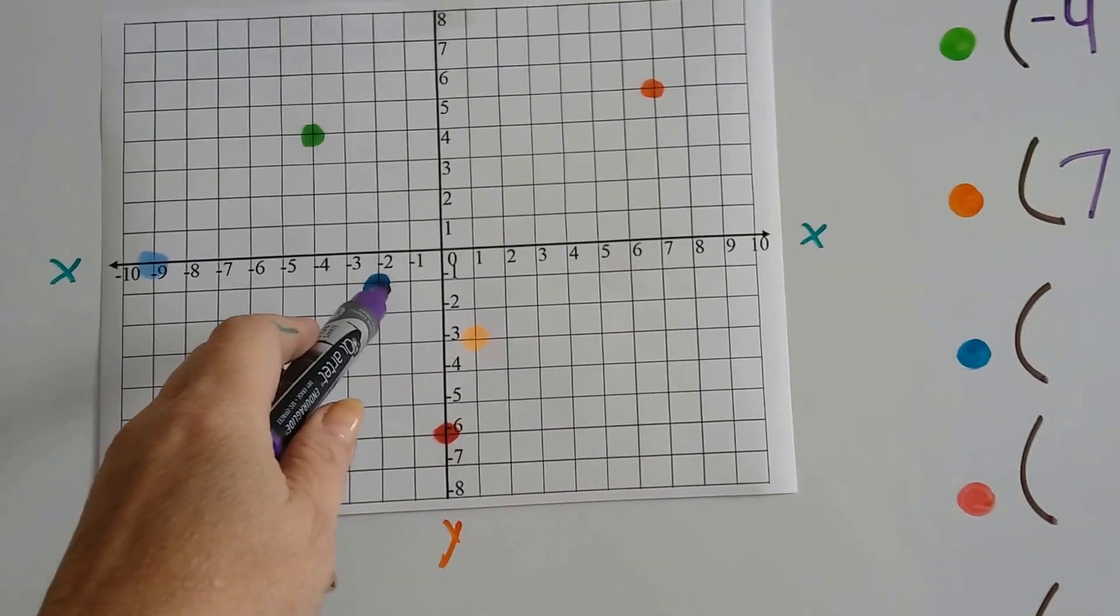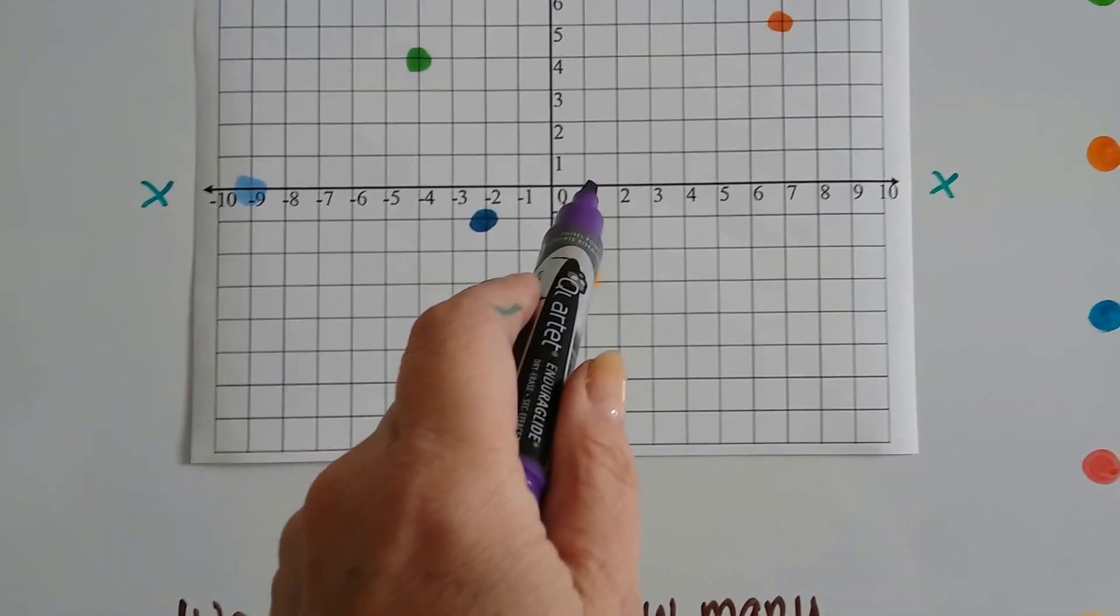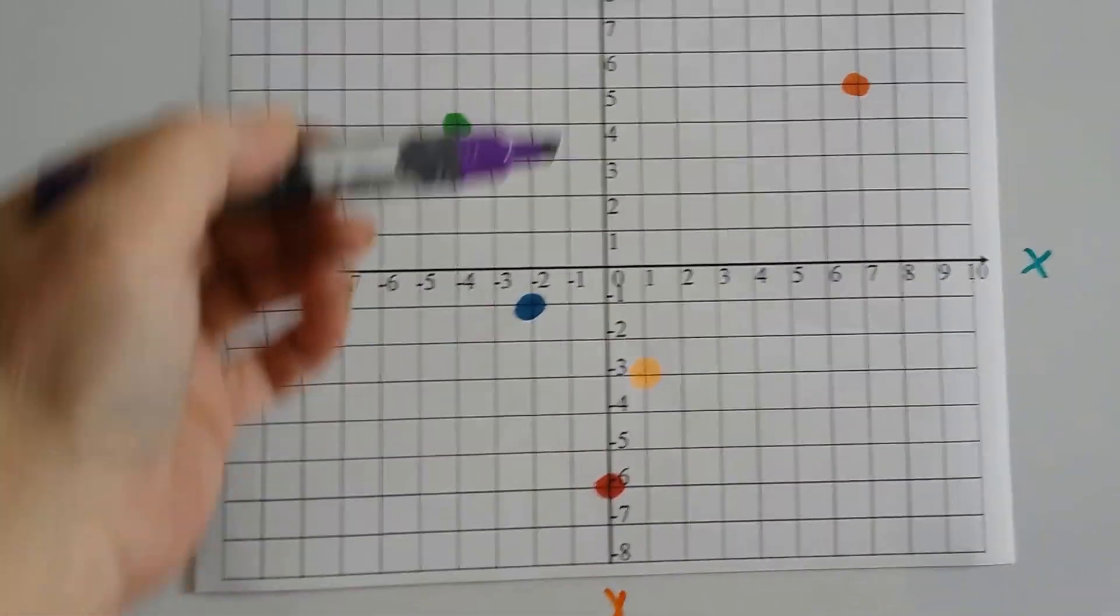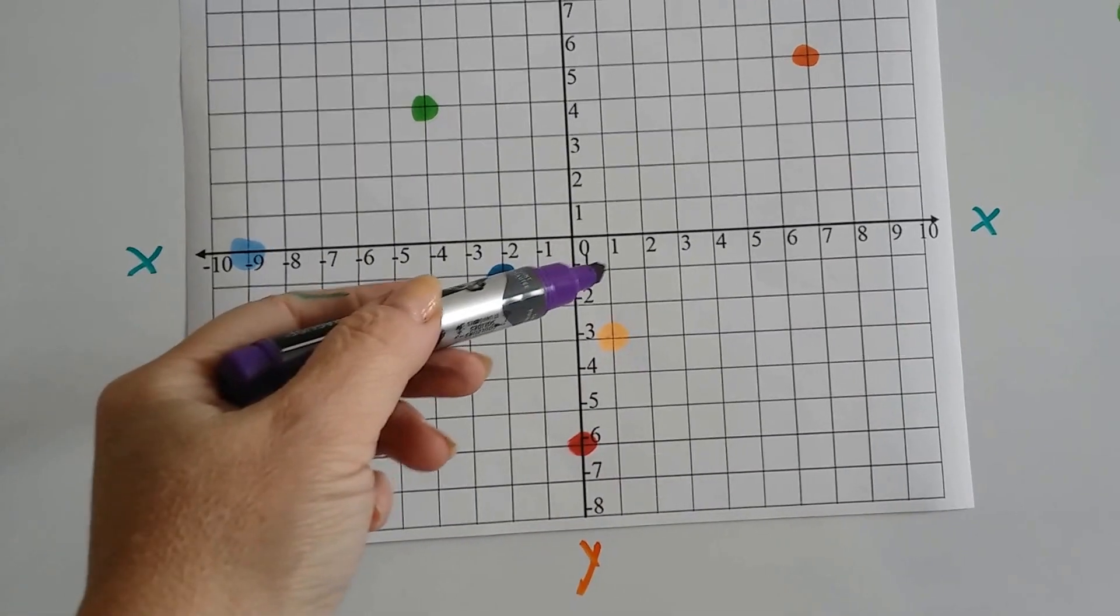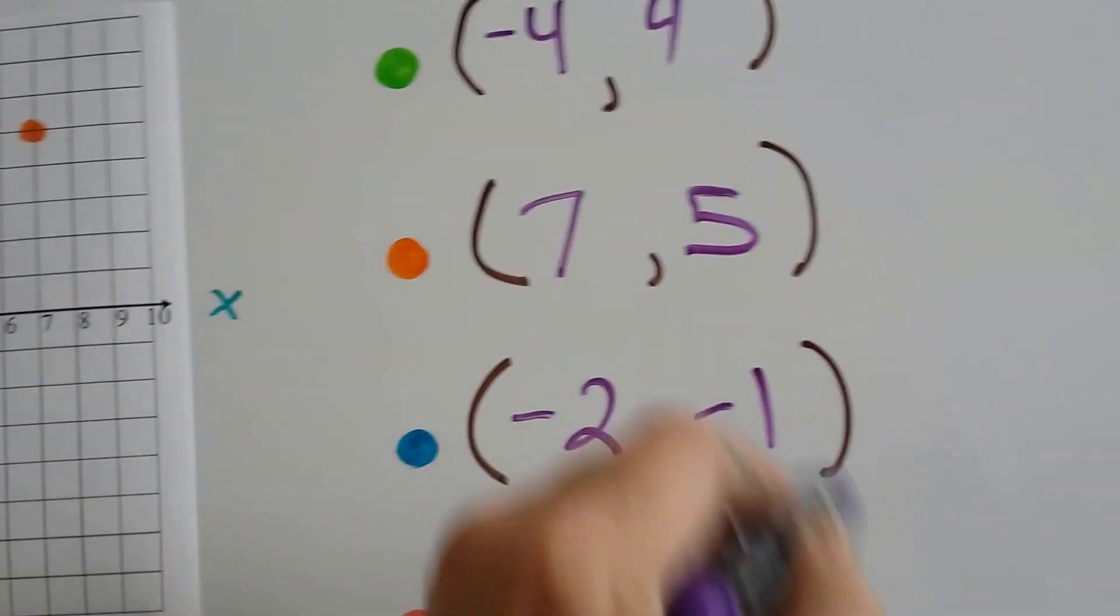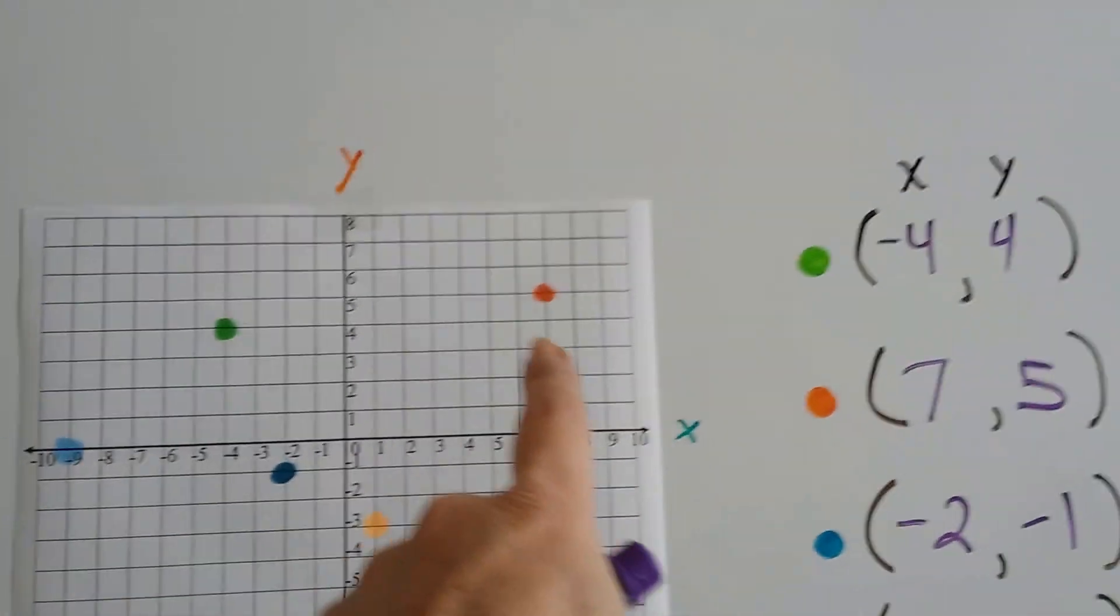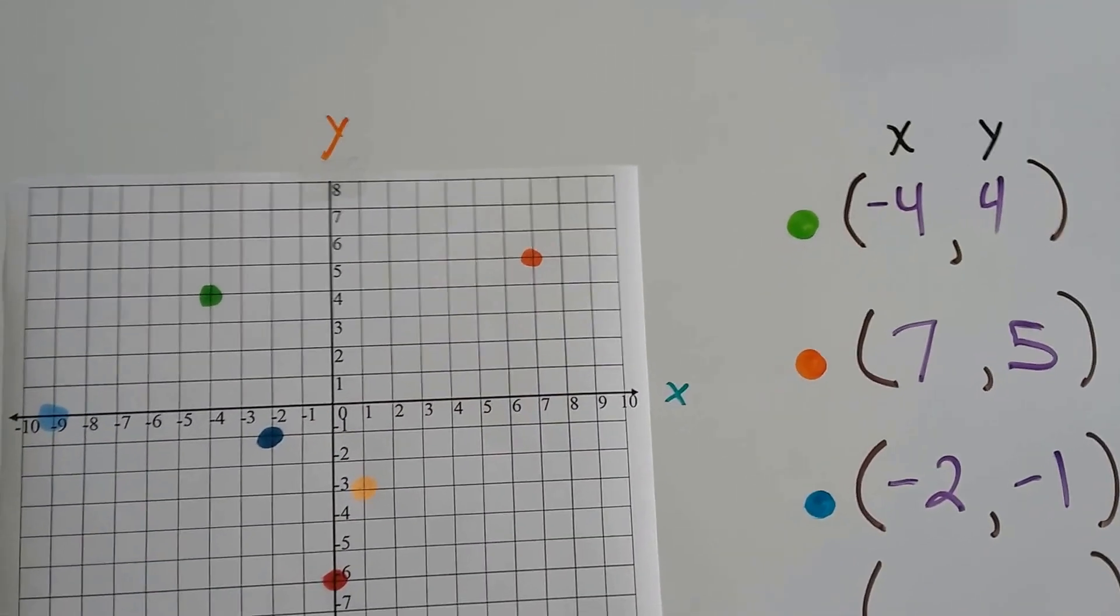What about the teal colored one, this one right here? On the x, because we always write the x first, it's at a negative 2, isn't it? And where is it for y? Here's the y. It hits the y at the negative 1. See that? So we got a negative 2, negative 1. And remember, if they're both negative, they're in this third quadrant, aren't they? Okay, these were both positive. The orange one, 7 and 5, so in the first quadrant.